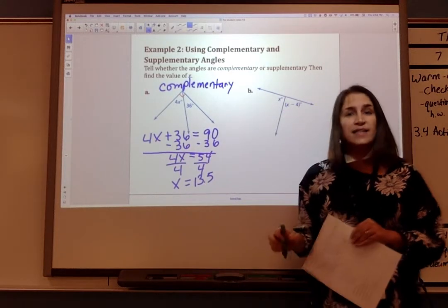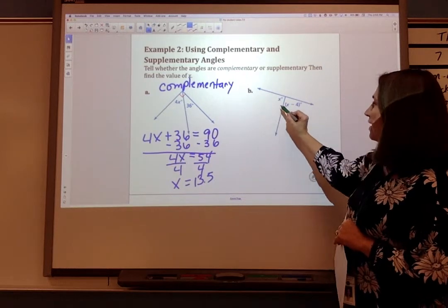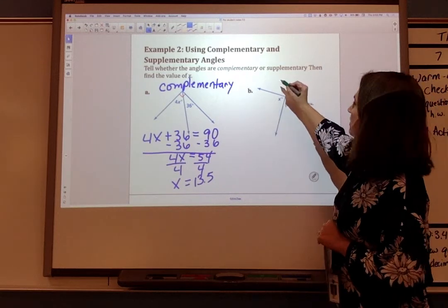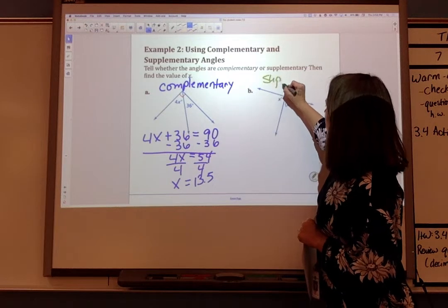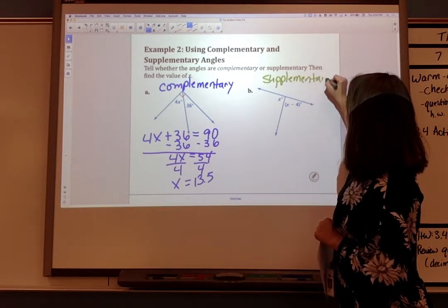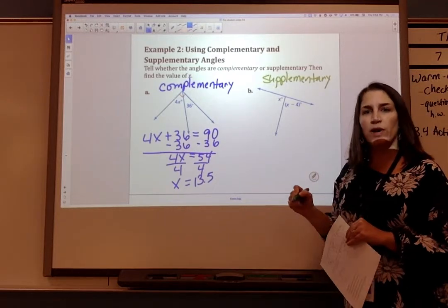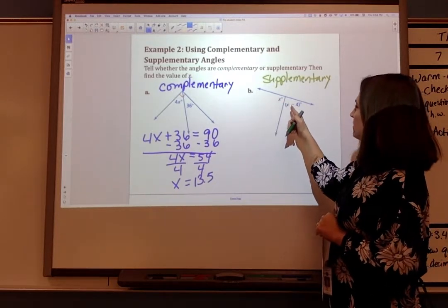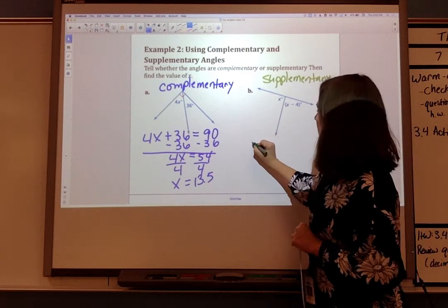For my second set of angles, I can tell that they're supplementary angles because they add to 180 degrees. So I can write an equation where X plus X minus 4 equals 180.